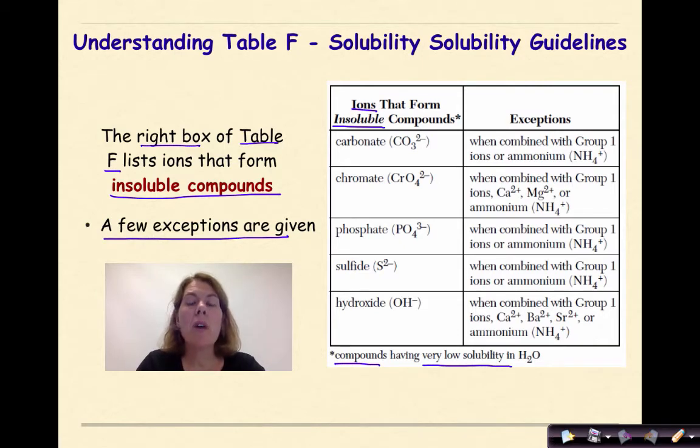So ions that form insoluble compounds include carbonate, CO3-2, chromate, phosphate, sulfides, and hydroxides. So in general, if you see that negative ion as part of a compound, your first instinct might be, okay, that is insoluble. It's not going to dissolve. But, of course, we do have exceptions. And in this case, there's a lot of exceptions.